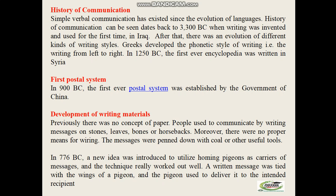Then the development of writing materials — the second evolution of communication. Previously there was no concept of paper. People used to communicate by writing messages on stones, leaves, bones, and horse bags. Moreover, there were no proper means of writing; messages were penned down with coal and other tools. This kind of information exchange was most common in China and Egypt. In 1700 BC, there was some development done to improve the writing surfaces, as writing on stones, bones, and horse bags was prone to fading in very little time, creating difficulty for people to understand what was written.